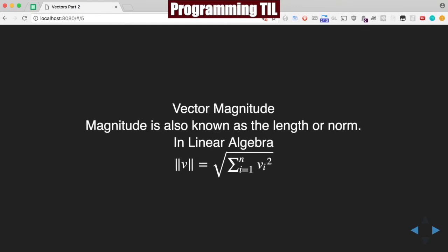Magnitude is also known as the length or norm in linear algebra. It's denoted by double pipes around the vector and equals the square root of the sum of all the components squared.